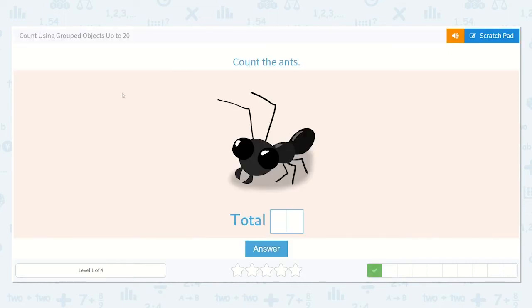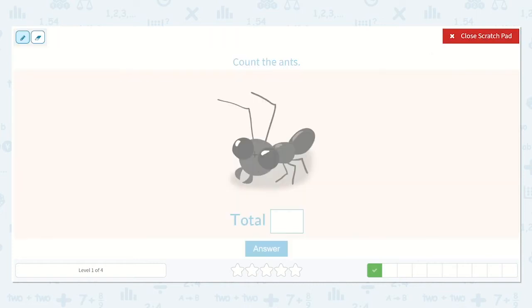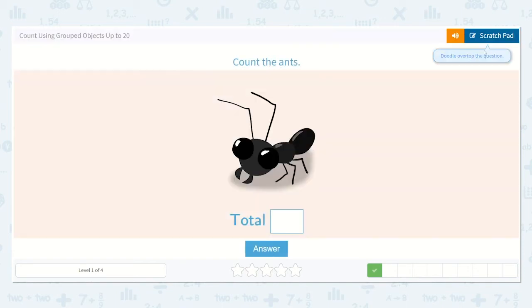Great, let's count the next one. I see one, one ant. Great, so let's type a one in this box.